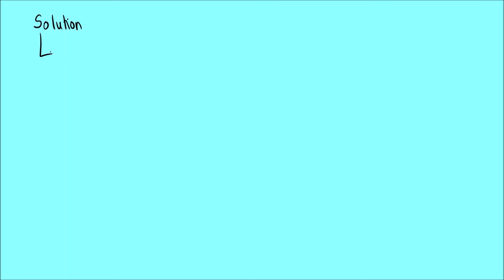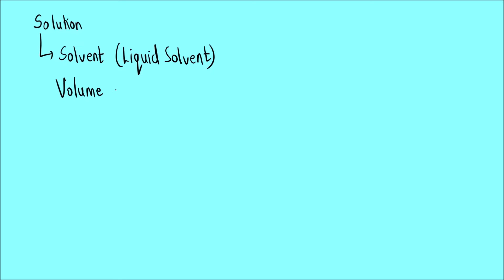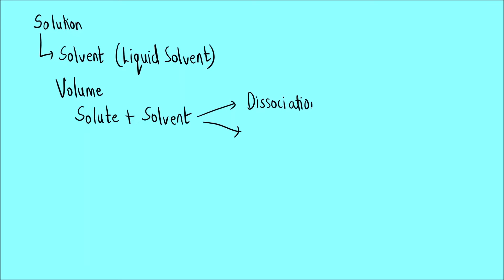When we talk about a solution with a liquid solvent, we consider the physical property of volume. Whenever a solute is dissolved in a solvent, most of the time there are two processes that can occur: one is called dissociation and another is association.